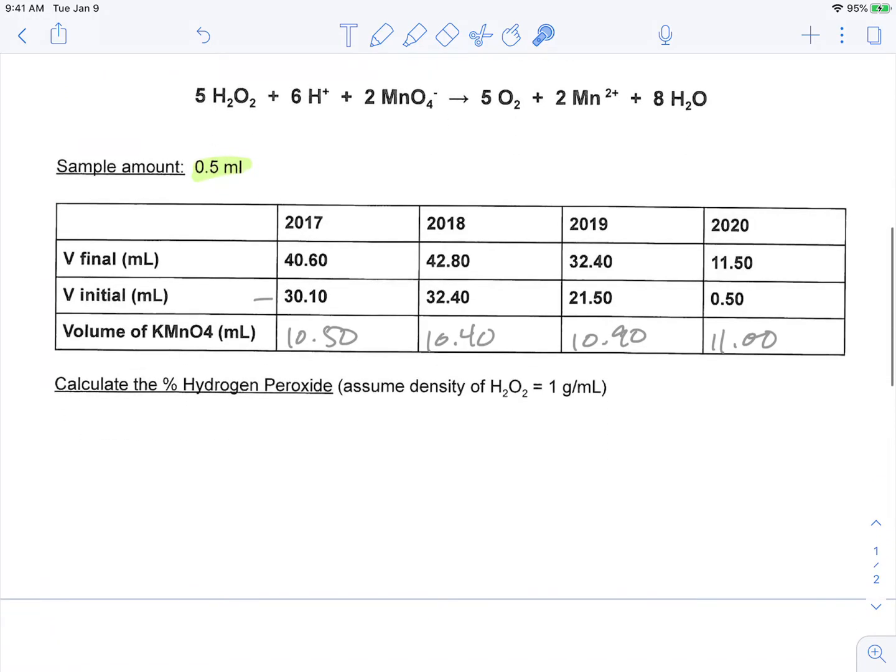Now what we're going to assume is that the density of hydrogen peroxide is about one gram per milliliter. So what that tells us is that if I had one milliliter of hydrogen peroxide, it would have a mass of one gram. So if I had a 0.5 milliliter sample, that means that I had about 0.5 grams of hydrogen peroxide. So with that in mind, what we're going to do is figure out what our percent hydrogen peroxide is. Now something that you want to think about is, well, what does that calculation look like in general?